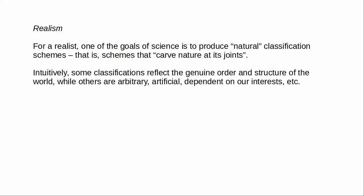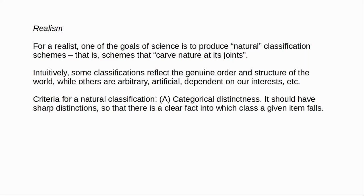There are three generally accepted desiderata for a natural classification scheme, from John Dupré's Disorder of Things. First, the classification should exhibit categorical distinctness — it should have sharp distinctions. There should be a determinate fact of the matter as to which class a particular item falls into. If there is instead only continuous variation, just a spectrum of things, then it's up to us where to draw the lines. As Brian Ellis in Scientific Essentialism puts it, if we have to draw a line anywhere, then it becomes our distinction, not nature's. We can't be carving nature at its joints if there are no joints at which to carve.